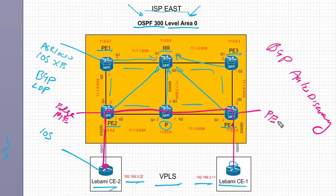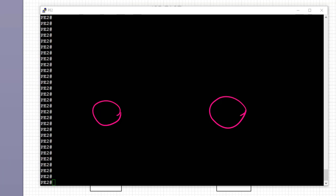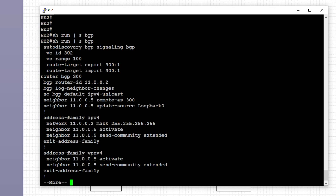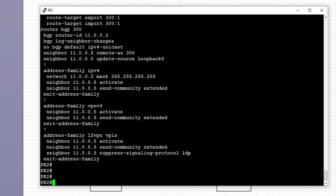We have two edge devices, PE2 and PE4, that will be configured for BGP auto-discovery. First, let's jump onto the PE and review some of the BGP configs. For those not familiar with the various address families — we typically use address family IPv4 and VPNv4 — we're going to be using address family L2VPN VPLS here. Let's look at the existing BGP config on PE2.